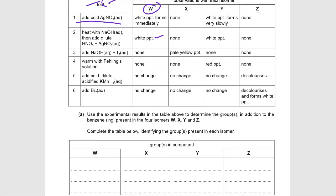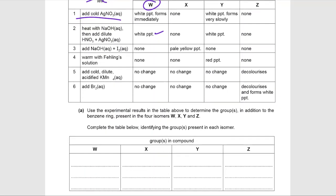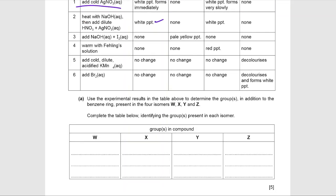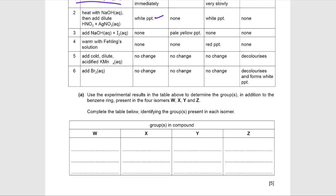Using the experimental results: compound W is identified as an acyl chloride. The structure drawn for W contains a benzene ring with an acyl chloride functional group (-COCl).